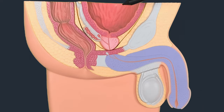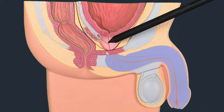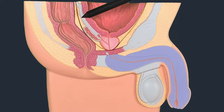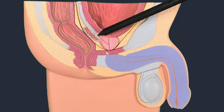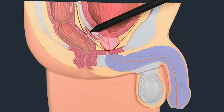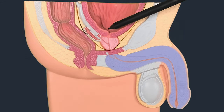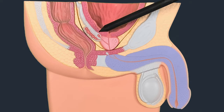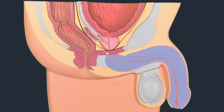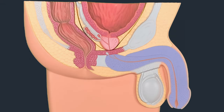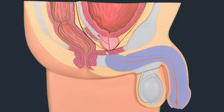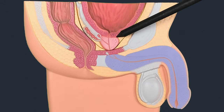Just behind, on the posterior surface of the urinary bladder, you can see the seminal vesicles. You can also see the ejaculatory duct — the ejaculatory duct is the continuation of the vas deferens.